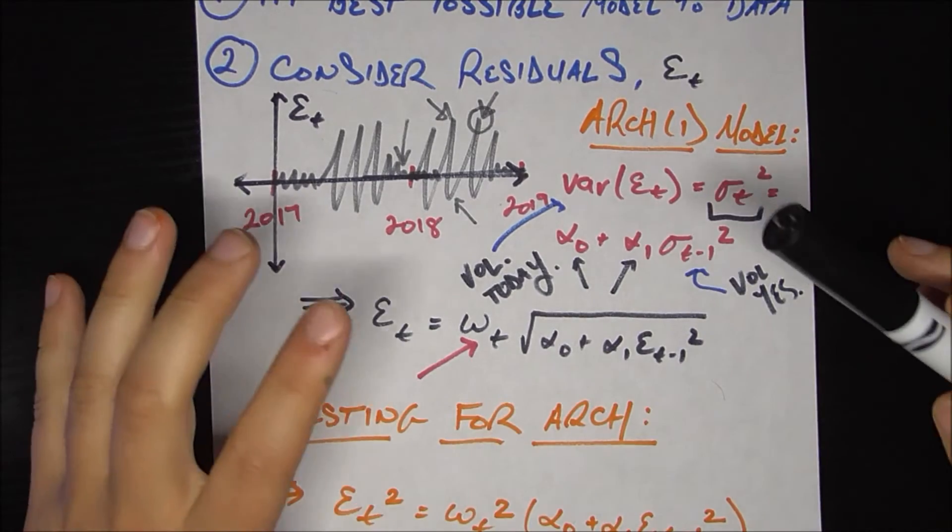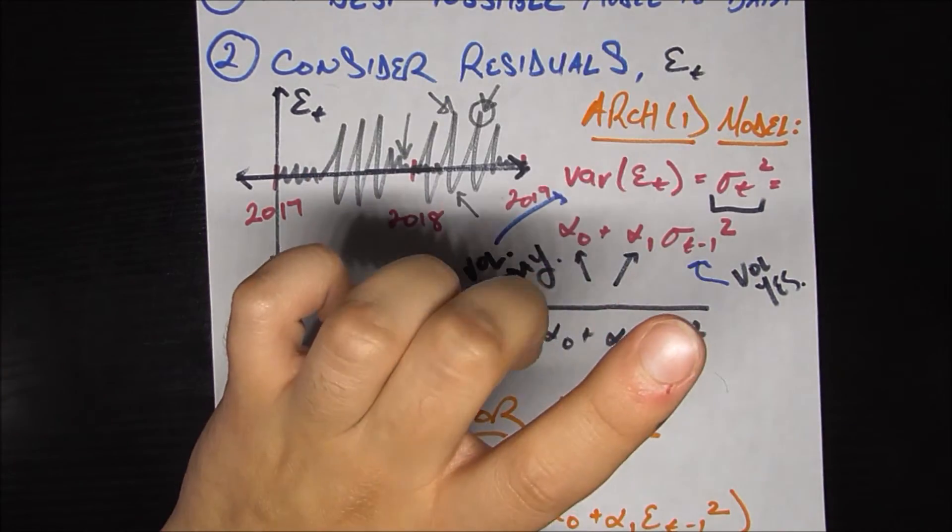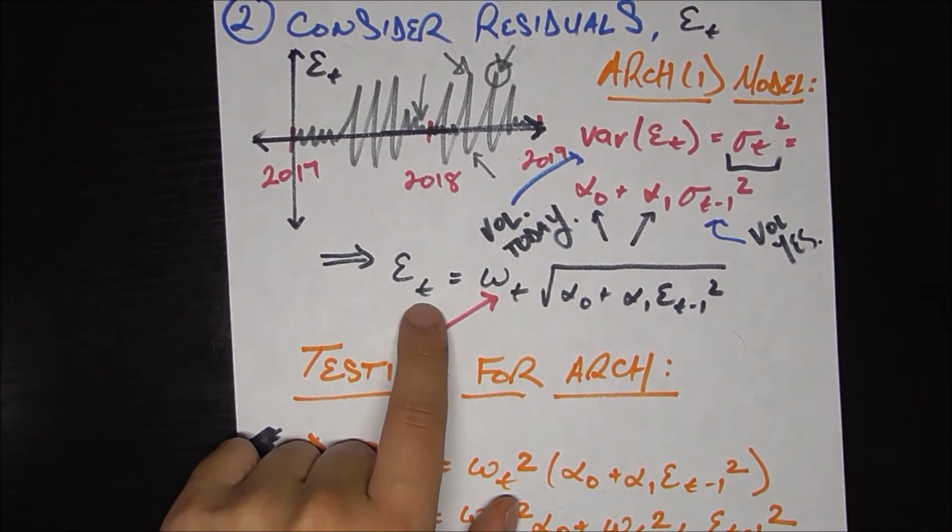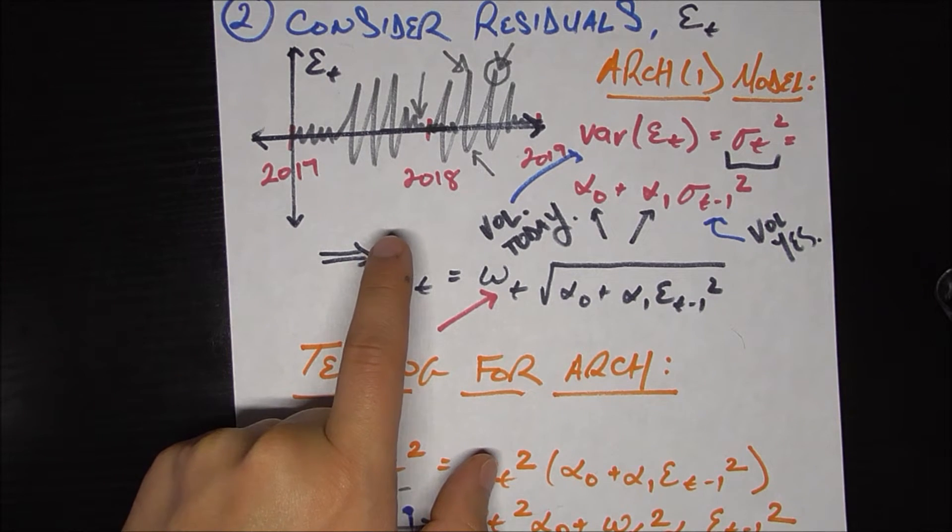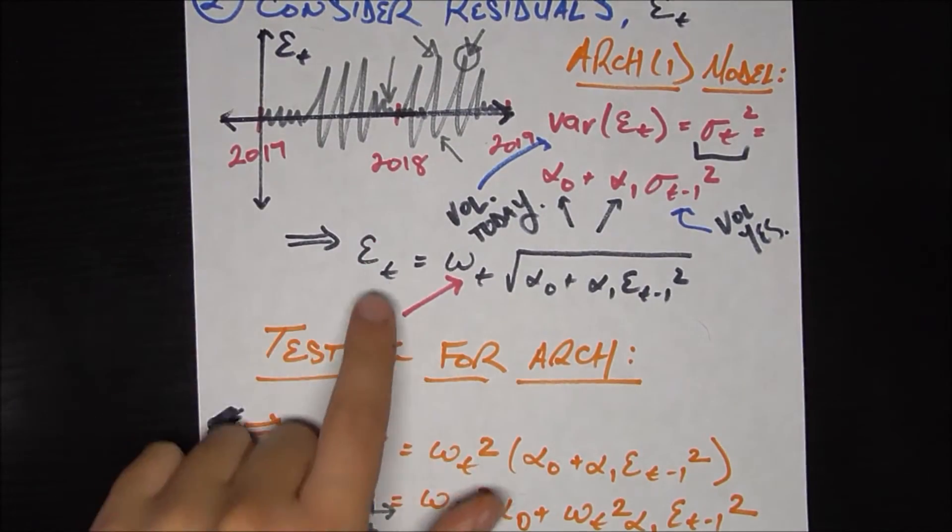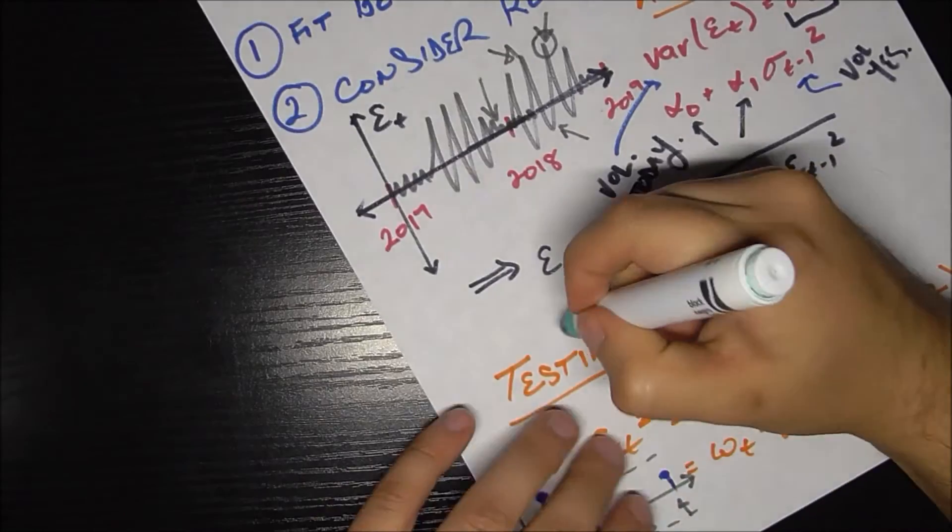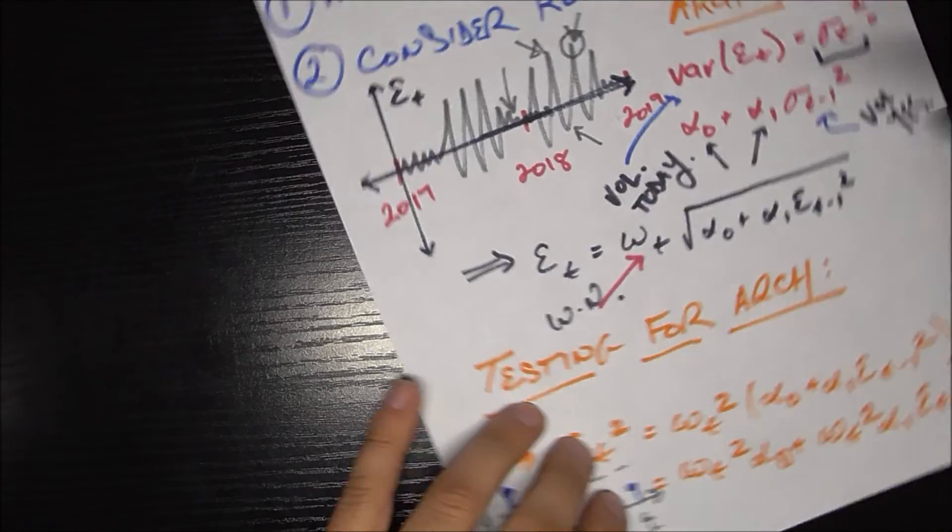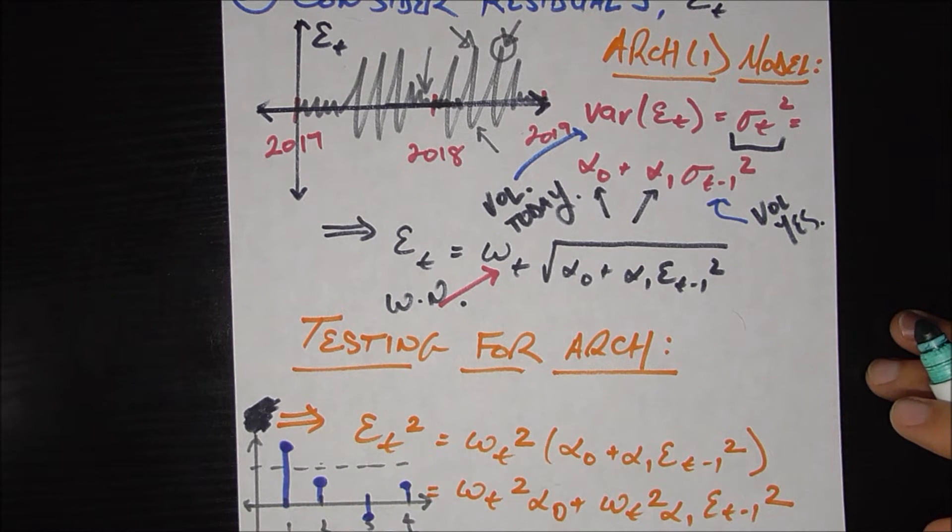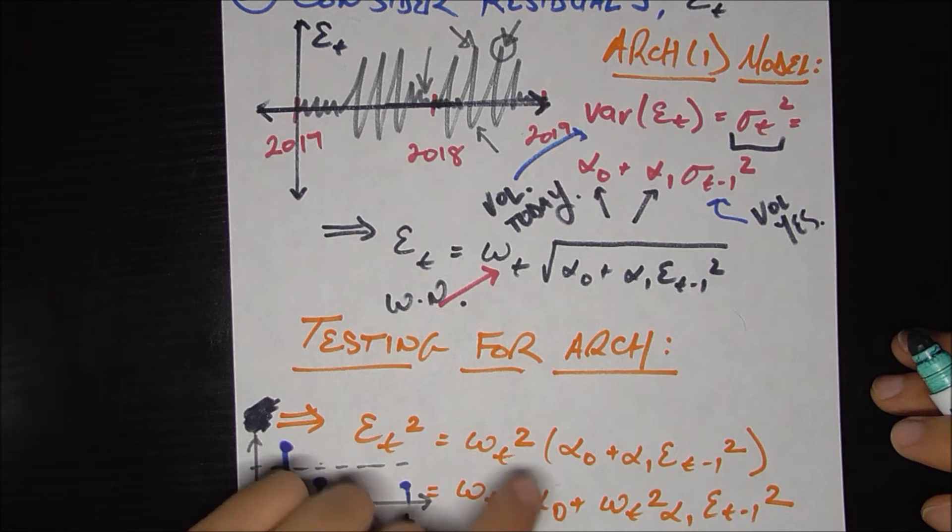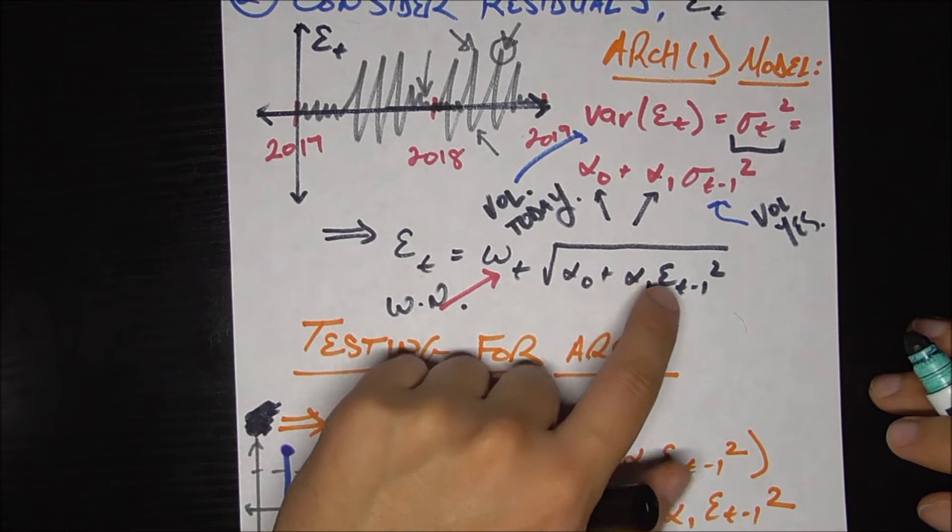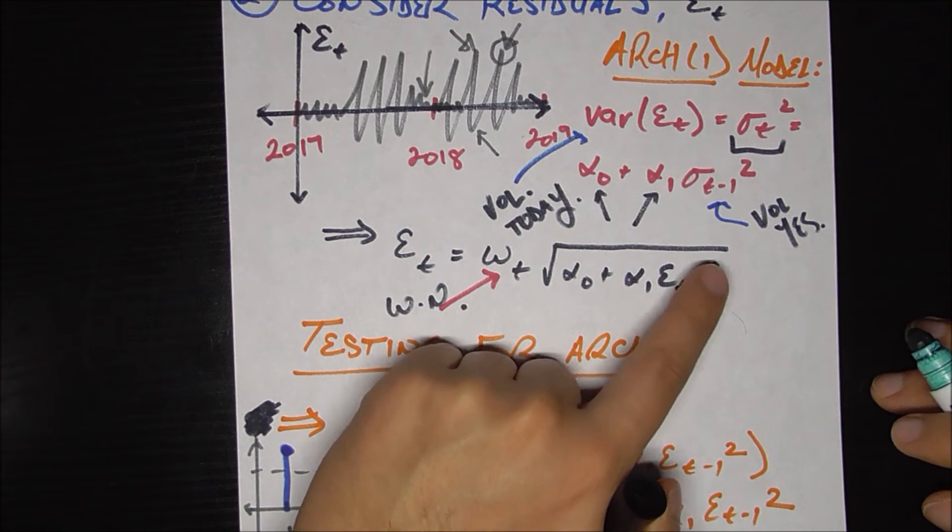So now without going too far into the math of it, this is the formulation for the variance, which leads to the actual formulation of your error, which is going to look like this. We're going to model your error, epsilon sub t, again, which is the result of the residuals of your best possible model. We're going to model that as equal to w sub t, w sub t being white noise, there's a whole video I made on white noise that you should watch if you're not familiar with it. But in a nutshell, it's just something unpredictable that we cannot hope to capture. So we're going to have that term here, times the square root of alpha sub zero plus alpha sub one times the error from yesterday squared.